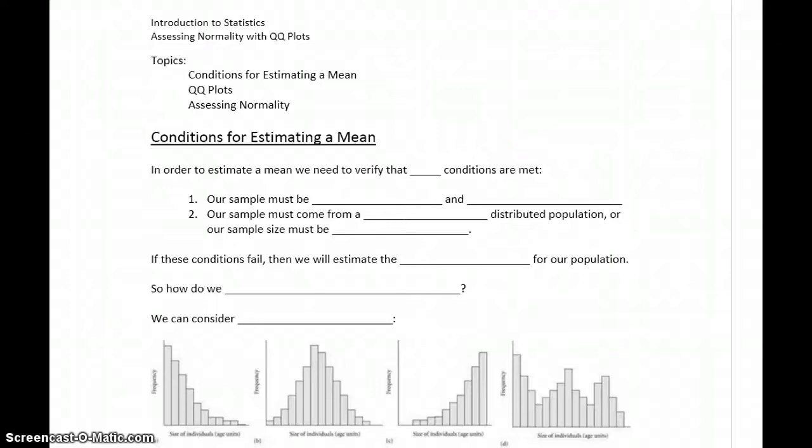When we discussed probability, we talked about dealing with problems with normal distributions, calculating probabilities, and those sorts of things. In those problems, we were told that our data follows a normal distribution. So that information was just provided for us.